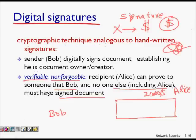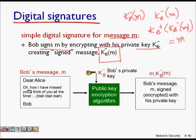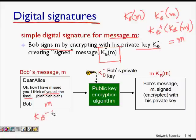For non-forgeability, no other person can replicate the signature. As an example, Bob has a message — 'Dear Alice, I have missed you, I think of you all the time.' Alice says he must send it in a verifiable way so she knows it is him and no one is pranking her. So how does it work? Bob signs the message with his private key kb minus, which only he knows, and sends the message along with the private-key-encrypted version.